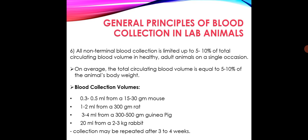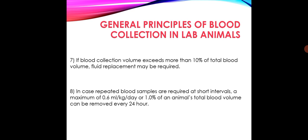Blood collection volumes are 0.3 to 0.5 ml from a 15 to 30 gram mouse, 1 to 2 ml from a 300 gram rat, 3 to 4 ml from a 300 to 500 gram guinea pig, and 20 ml from a 2 to 3 kg rabbit — collection may be repeated after 3 to 4 weeks. If blood collection volume exceeds more than 10 percent of the total blood volume, fluid replacement may be required. For repeated blood samples at short intervals, a maximum of 0.6 ml per kg per day or 1 percent of the animal's total blood volume can be removed every 24 hours.